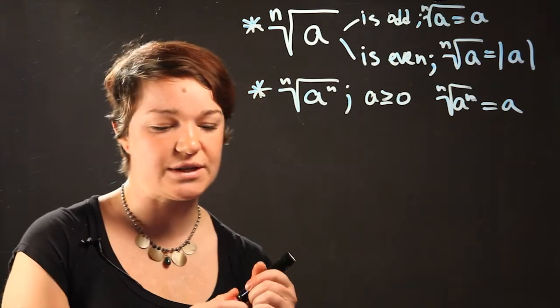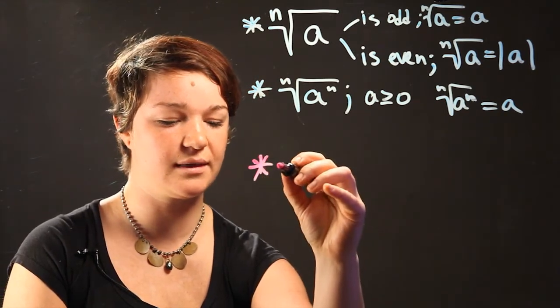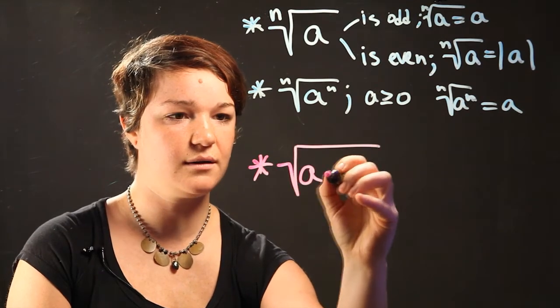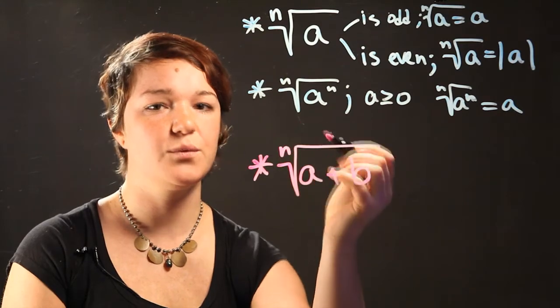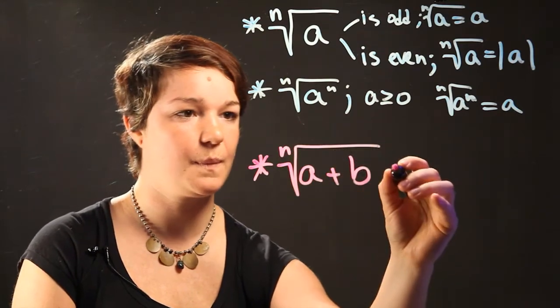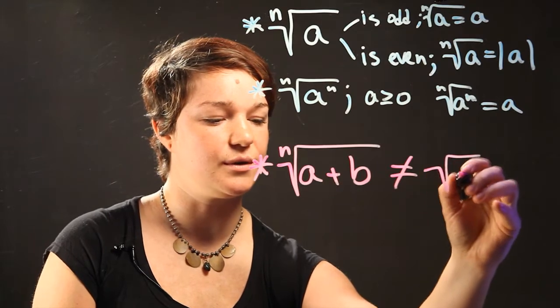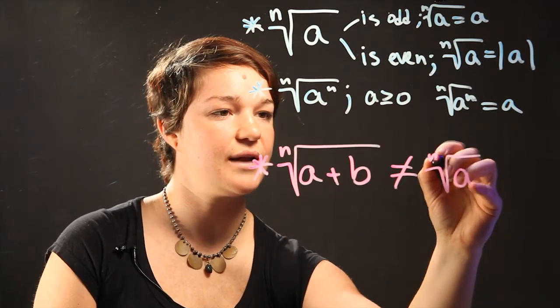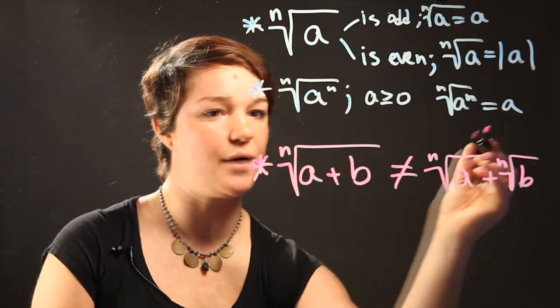Now the restrictions here are if you have something that looks like this: the radical of a plus b with index to the n power. So this basically is not going to equal the same as the radical of a to the n power plus the radical of b to the n power.